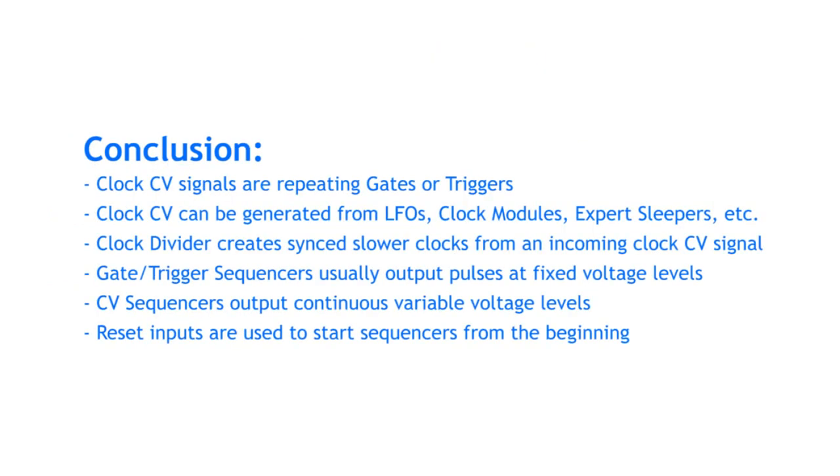Clock signals are gates or triggers that repeat at a set frequency. You can generate a clock in many different ways, for example with a square wave LFO. A clock divider creates a number of slower clocks from an incoming clock signal. Gate or trigger sequencers output pulses at a fixed level, and CV sequencers output a continuous but variable signal. Sending a high signal to a reset input will start the sequencer from the beginning.